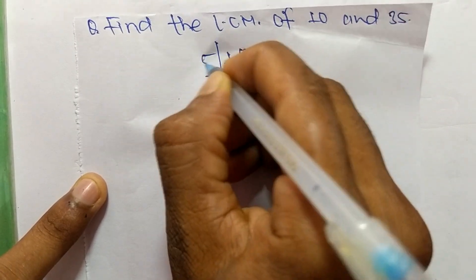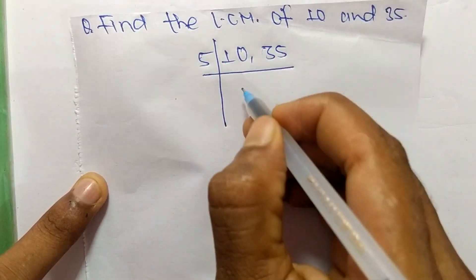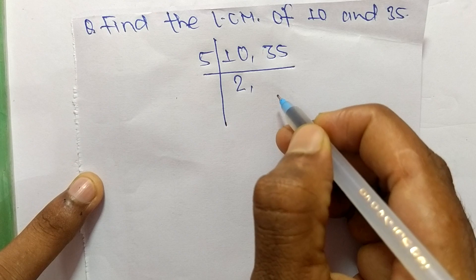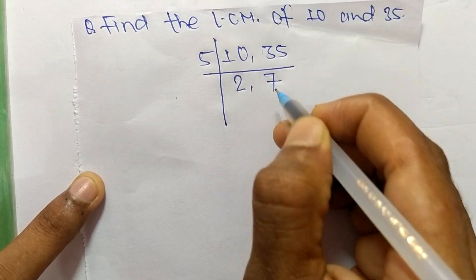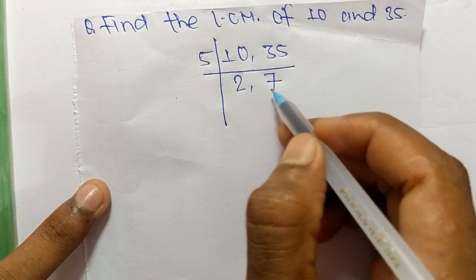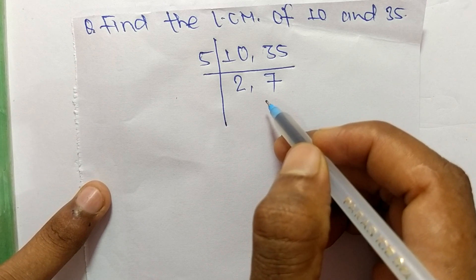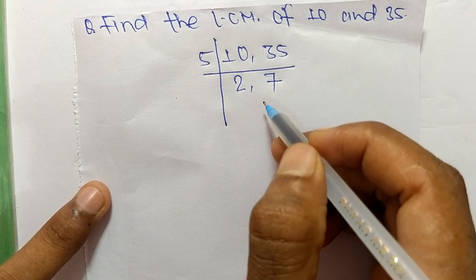So the number is 5. 5 times 2 means 10 and 5 times 7 means 35. So we get here 2 and 7 which are not exactly divisible by same number.